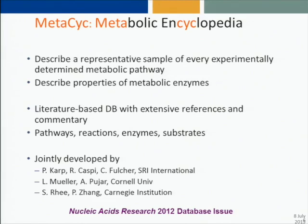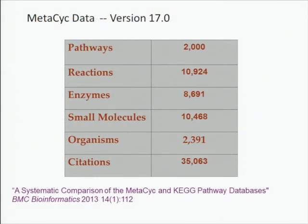What's MetaPsych? MetaPsych is a metabolic encyclopedia that describes experimentally determined pathways and enzymes from all domains of life. Its goal is to describe every known experimentally elucidated pathway, although we haven't achieved that goal yet. Its content comes from the literature. MetaPsych contains 2,000 metabolic pathways studied in about 2,400 different organisms, about 11,000 biochemical reactions, and its contents have been derived from more than 35,000 publications since we started the project in about 1997. The database is manually curated by a staff of PhD biologists who manually extract pathway and enzyme information from the literature.